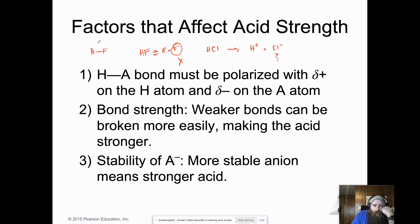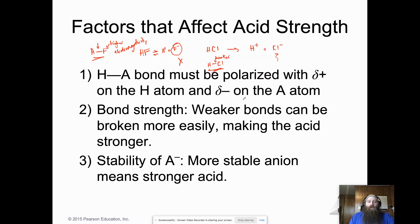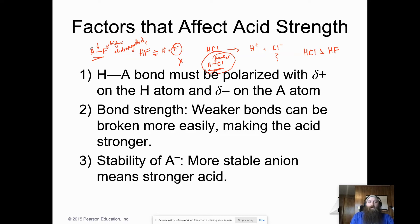Think about the HF bond versus the HCl bond. Fluorine has higher electronegativity, making the H–F bond stronger and harder to break. So HCl is a stronger acid than HF. The weaker the H–A bond, the stronger the acid. We can describe this two ways: by bond strength or by anion stability — F⁻ wants to recapture that proton to achieve a full octet.